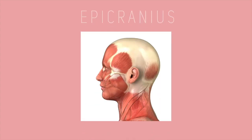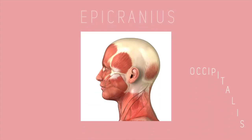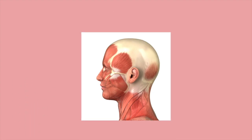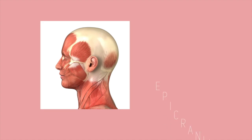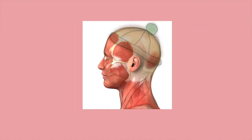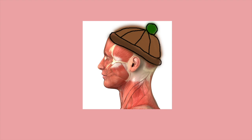First, let's explore the muscle called the epicranius. It has two parts, namely the occipitalis and the frontalis. It is united by a tendon referred to as the epicranial aponeurosis, which covers the top of the cranium just like a hat.